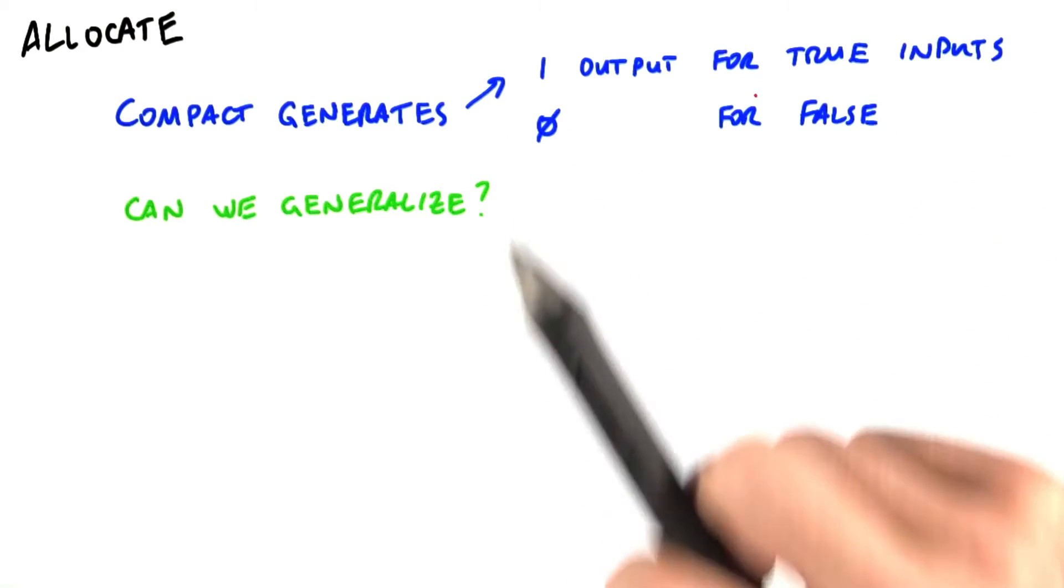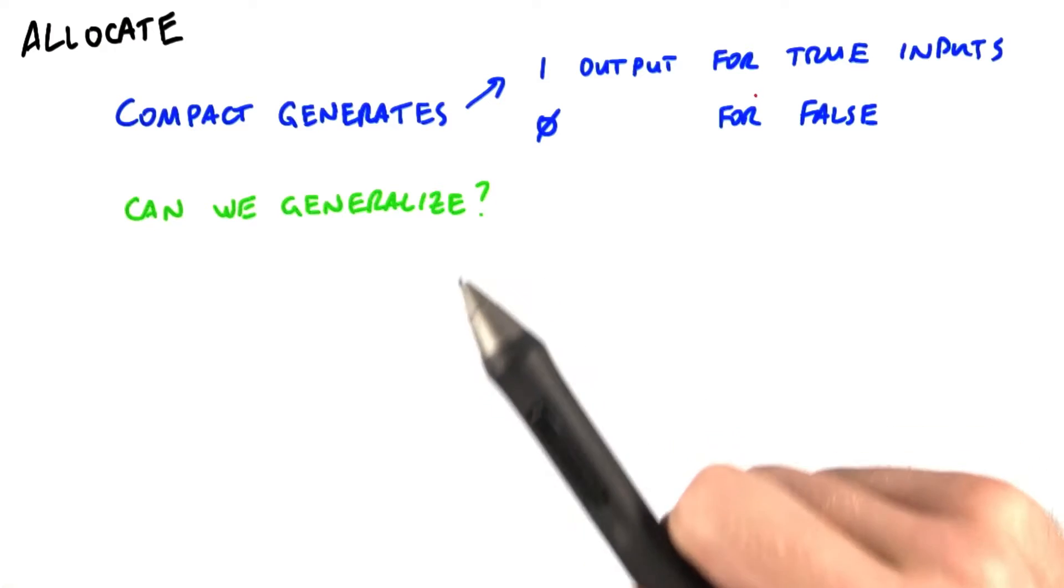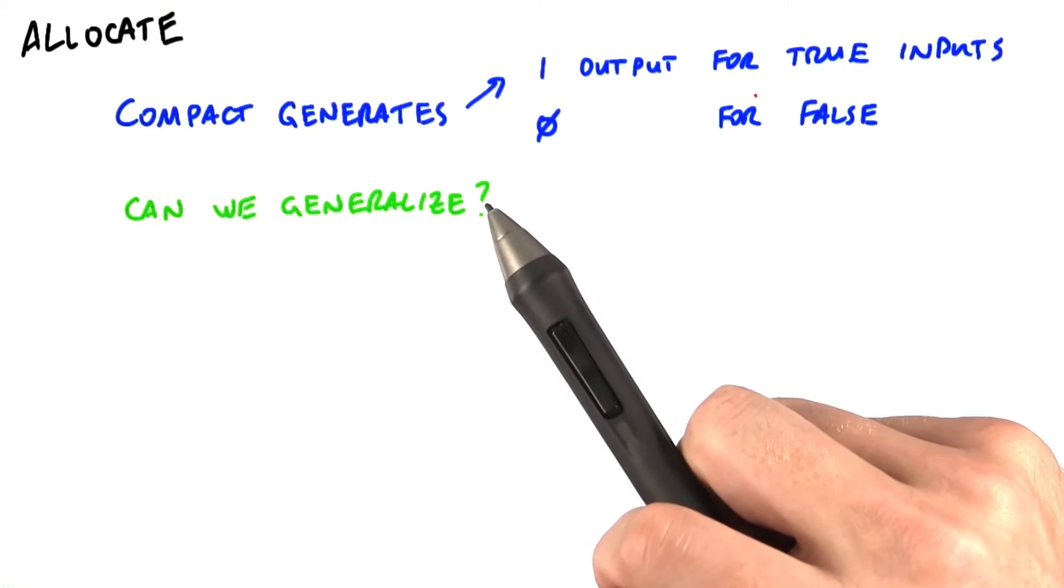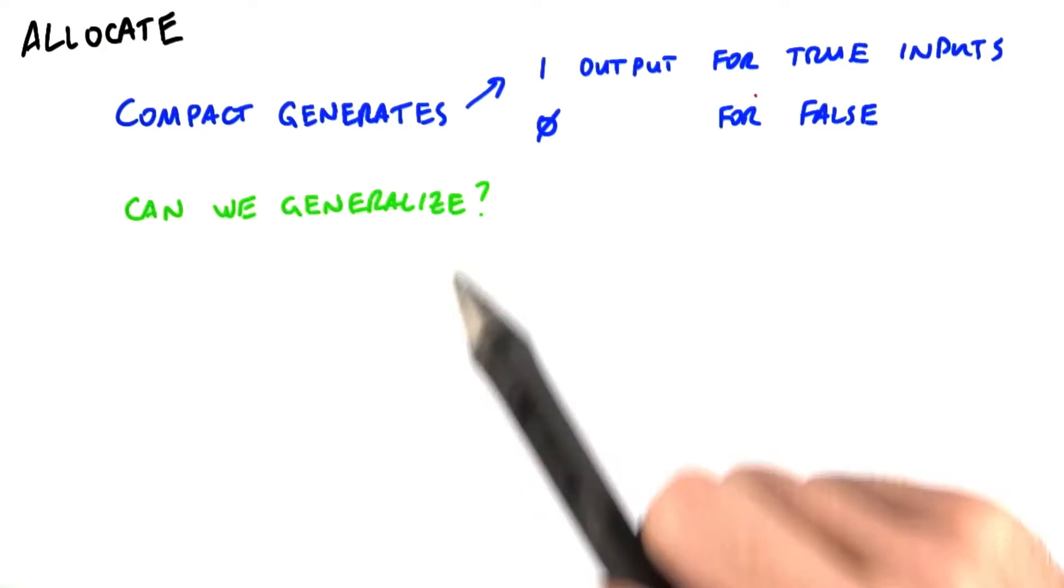This is useful, of course, and compact is a really common operation. But more generally, we can do a compact-like operation where the number of output items can be computed dynamically for each input item.